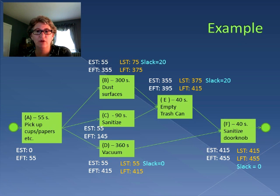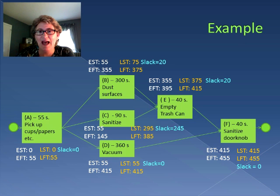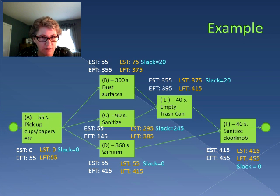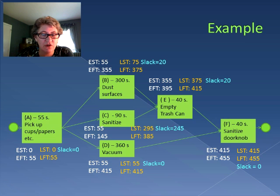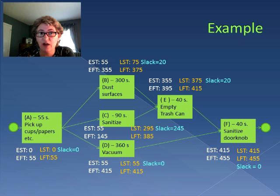We do the same thing for Activity C. And then when we get back to Activity A, let's take a good hard look at that. Activity A must be finished by the earliest time of all of the activities following it. Activity B has to start by 75, Activity C doesn't have to start until 295, and Activity D has to start by 55. So the latest Activity A can finish is 55, meaning the latest it can start is 0, and there's no slack for Activity A.